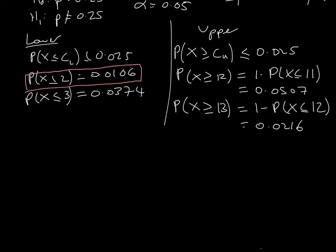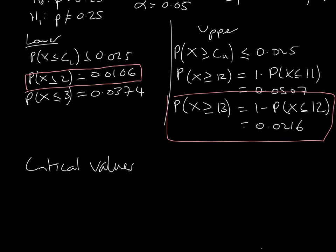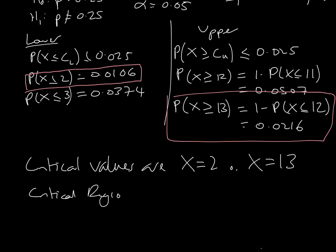Our critical values are X equals 2 or X equals 13. We will know there's been a change in the probability of someone taking the offer if two people or fewer take up the offer — meaning the probability has gone down — or if 13 or more people take the offer — meaning the probability has gone up. The critical regions are X less than or equal to 2 and X greater than or equal to 13.